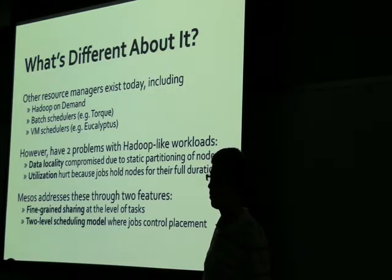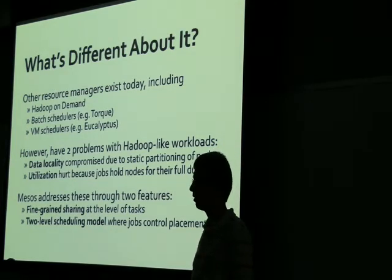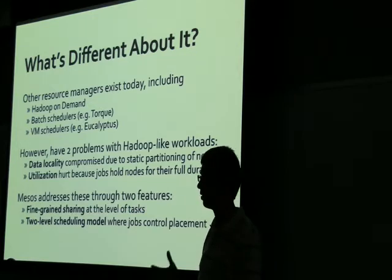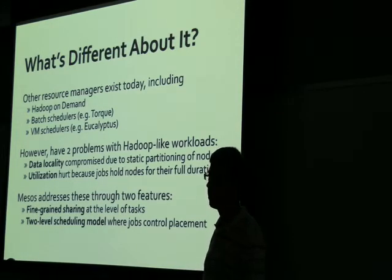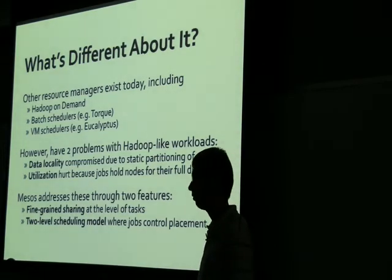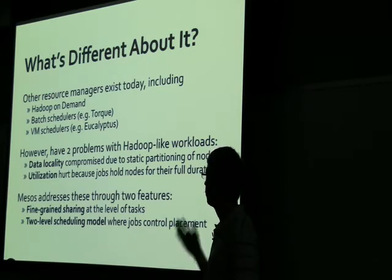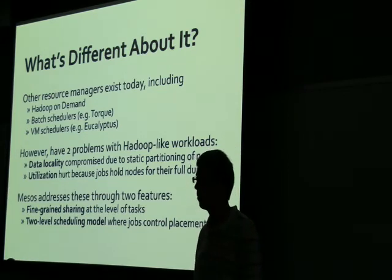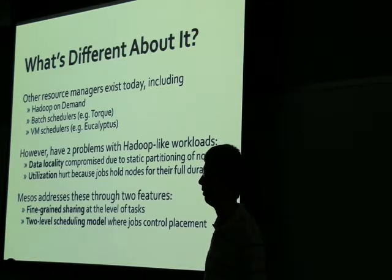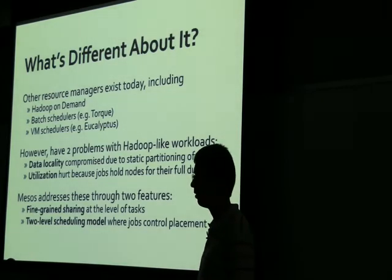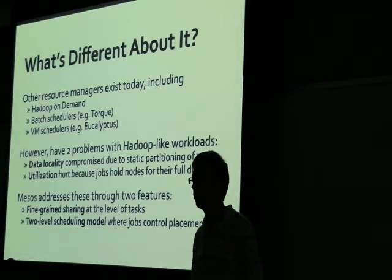In traditional cluster schedulers, each application gets a static slice of the cluster — some fixed set of machines — and keeps that slice for its whole duration. The problem with data locality is that the data the application wants might not be on its static slice, so it has to read across the network and performance suffers. This is actually why Yahoo moved away from Hadoop on Demand to a single job tracker with fast scheduling. The utilization problem is that if one of your Hadoop instances isn't running any jobs, those nodes just sit idle when they could be used by other applications.